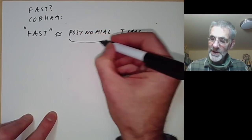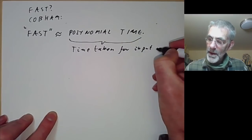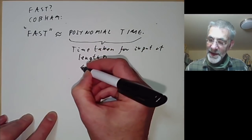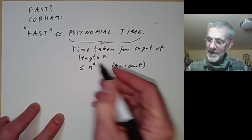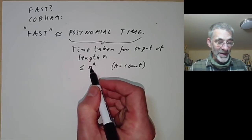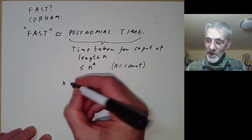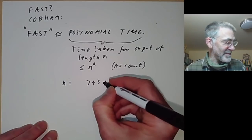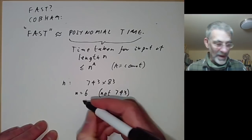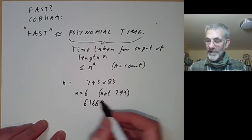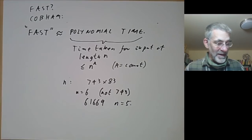Polynomial time means the time taken for an input of length n should be less than or equal to some polynomial in n, such as n to the a for some constant a. So n is the length of the input, and the time should be at most n squared or n cubed or something. Notice that n is the length of the input — so if our input is 743 times 83, then n equals 6, not 743. Similarly, if we were factorising 61669, we want to factorise it in time that's polynomial in the number of digits, which is 5, which is very much harder to do.